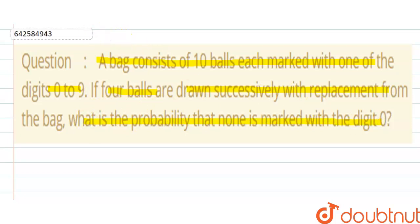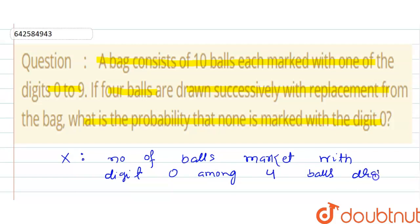So we have to define some event like this. X is a variable which is defined as number of the balls marked with the digit 0 among the 4 balls drawn.